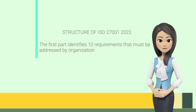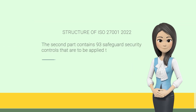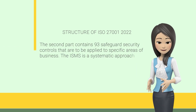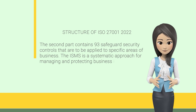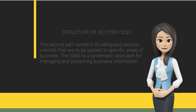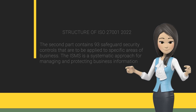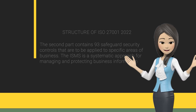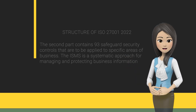The ISO 27001 standard consists of two parts. The first part identifies 10 requirements that must be addressed by the organization. The second part contains 93 safeguard security controls that are to be applied to specific areas of business. The ISMS is a systematic approach for managing and protecting business information.